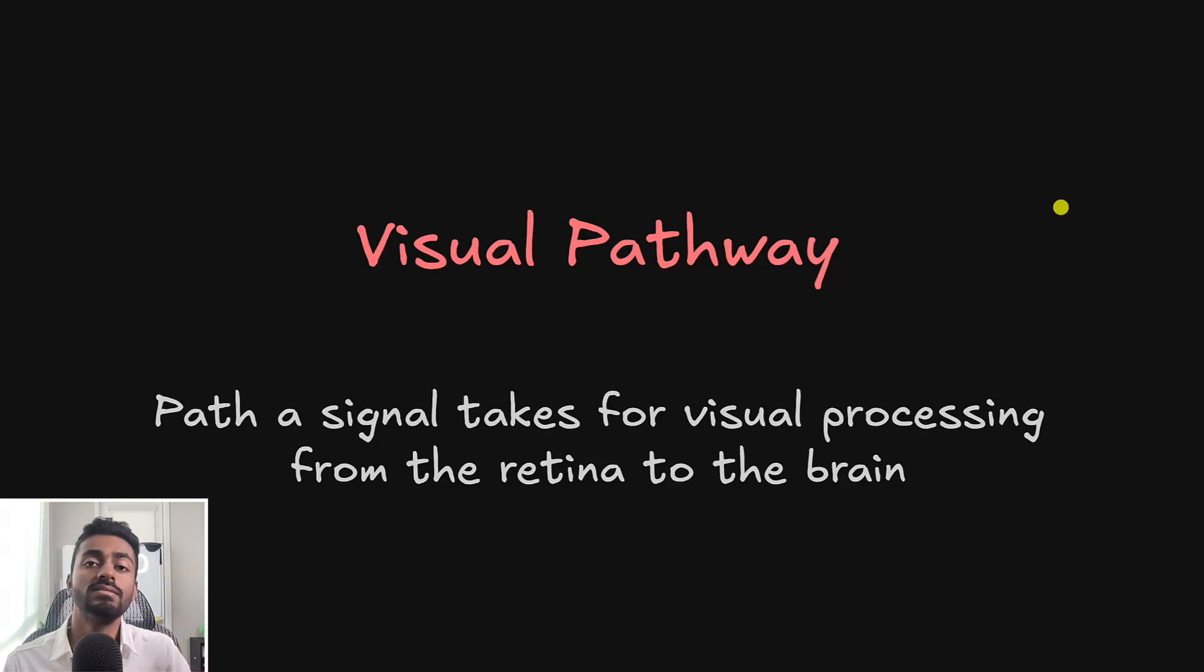Greetings fellow learners. In this video we are going to talk about the visual pathway, which is the path that a signal takes for visual processing from the retina to the brain. We're going to discuss different components of this, so let's get to it.